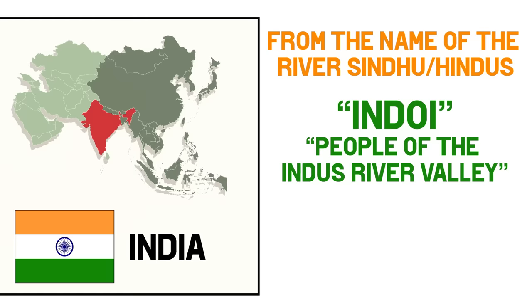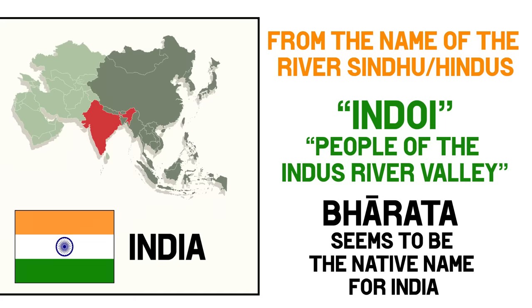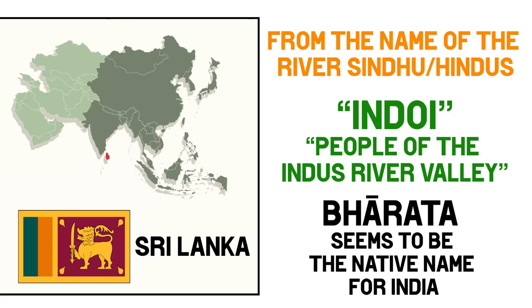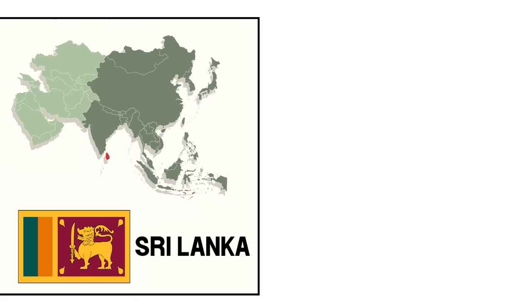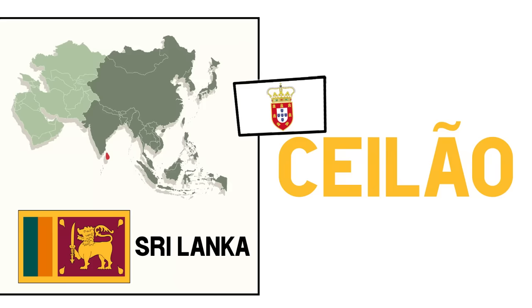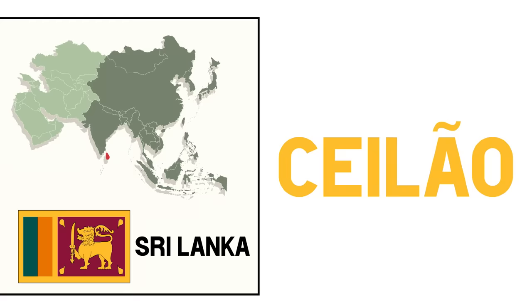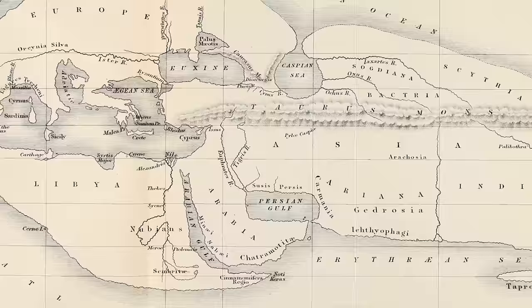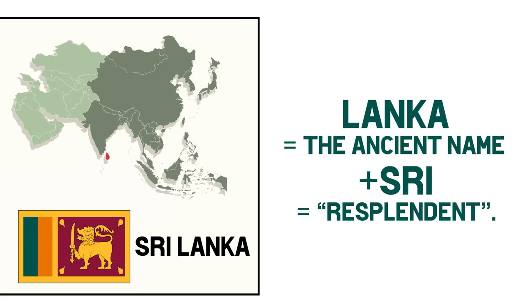Bharata seems to be the native word for India, and it is said to be derived from the name of an important religious figure. And a smaller island south of it, Sri Lanka. Sri Lanka has had many names throughout history, from Tambapani meaning copper-red earth. Ancient Greek geographers called it Taprobana, the Portuguese named it Ceilão, which the English then translated to Ceylon. The current name of Sri Lanka divides itself into Lanka, the ancient name of the island, and Sri meaning resplendent — so resplendent island.